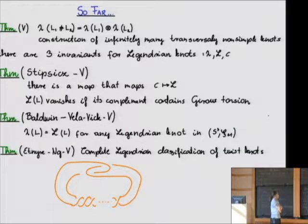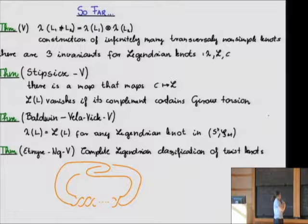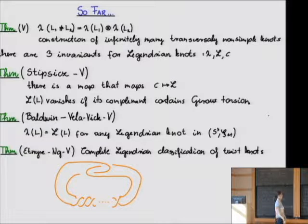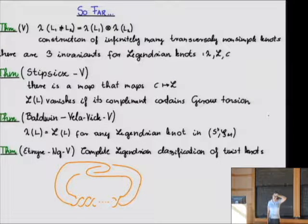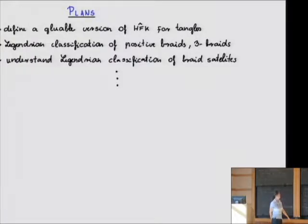Using this invariant I constructed infinitely many transverse knots. There are two Legendrian invariants defined in the Heegaard Floer setting, and a third one as well. We gave a map bringing the third invariant to the general one, which under certain conditions proves the Legendrian invariant vanishes. We recently proved that the grid invariant equals the other Heegaard Floer invariant in the standard contact structure, and using Heegaard Floer invariants we gave a complete classification of twist knots.